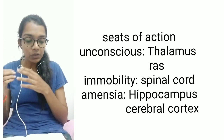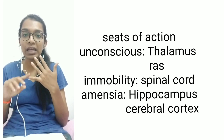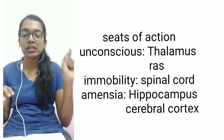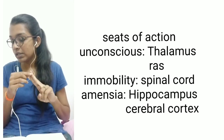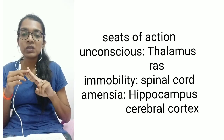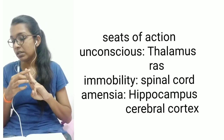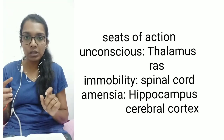Now let's look at the sites where an anaesthetic acts. To cause unconsciousness, it acts on the thalamus and reticular activating system. To cause amnesia, it acts on the cerebral cortex and hippocampus. And to cause immobility, it needs to act on the spinal cord.